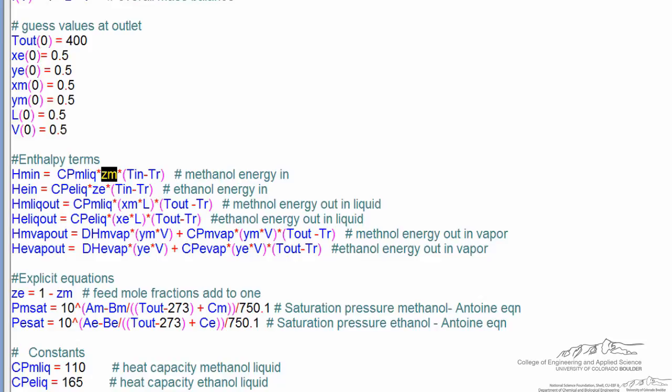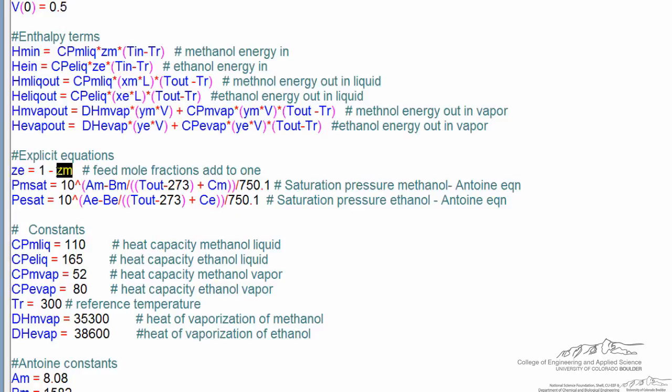I input the mole fraction of methanol in the feed and this calculates the mole fraction of ethanol. Here are the two Antoine equations for saturation pressure. And something you note is that we're working in Kelvin, but the Antoine equations are in degrees centigrade. So we have to subtract 273 to use the Antoine equations. But that's a typical way Antoine equations are given. And then we have a number of constants for the heat capacities and heat of vaporization.